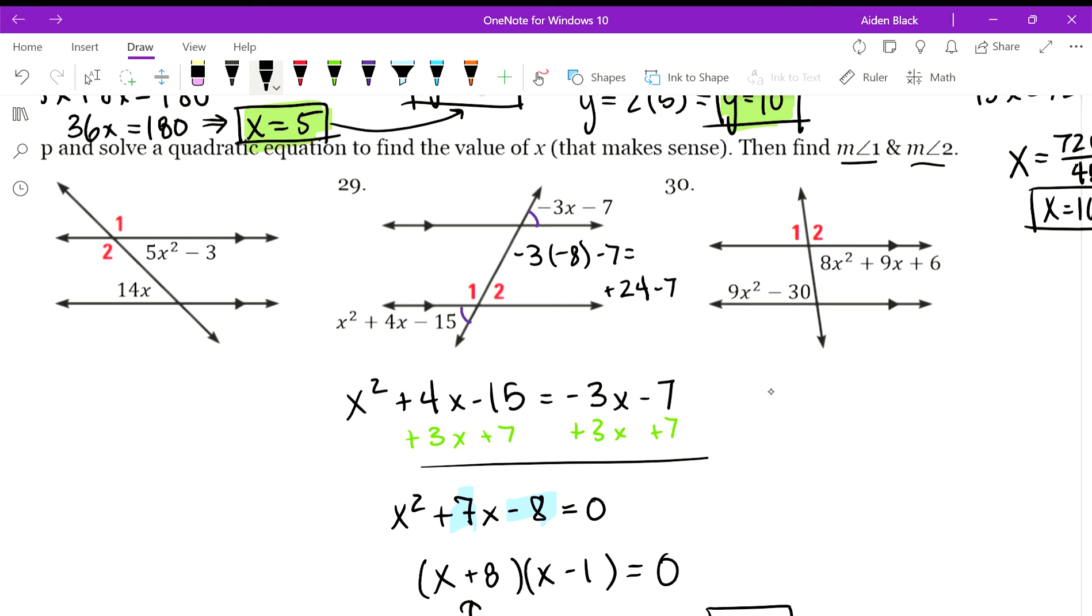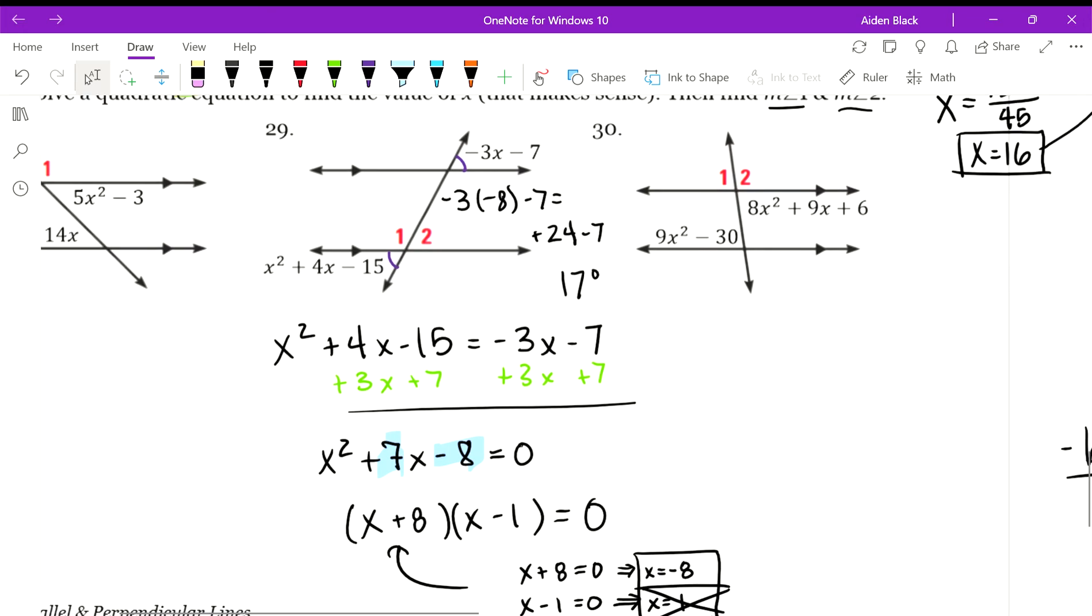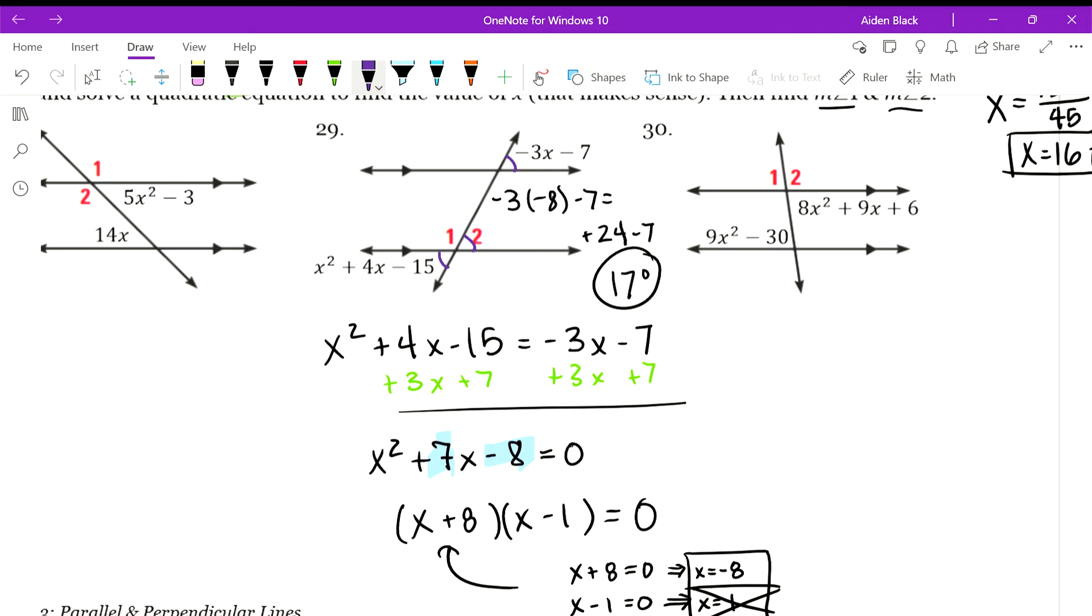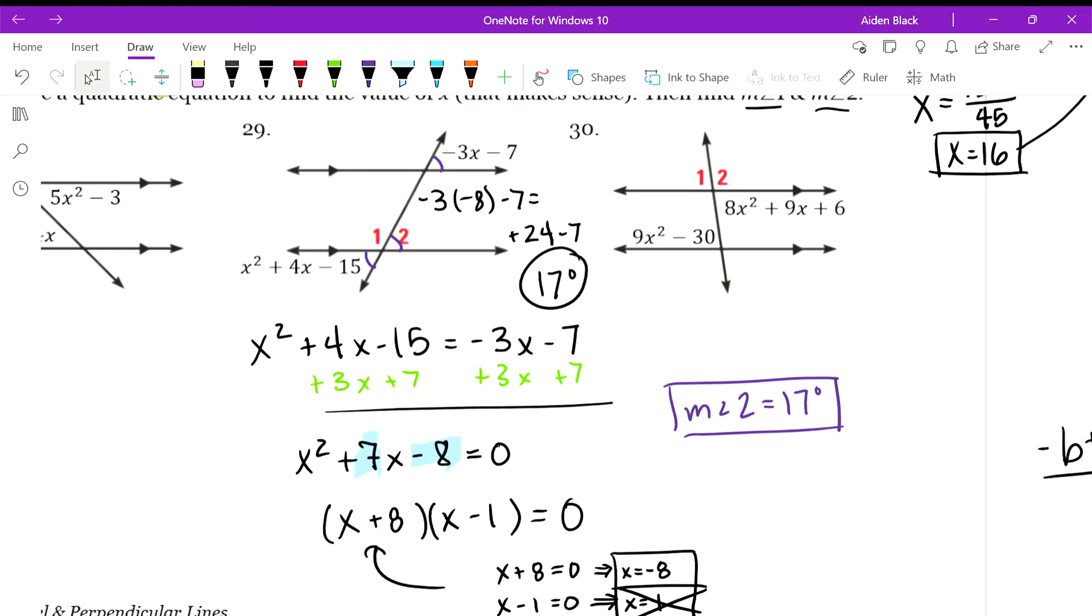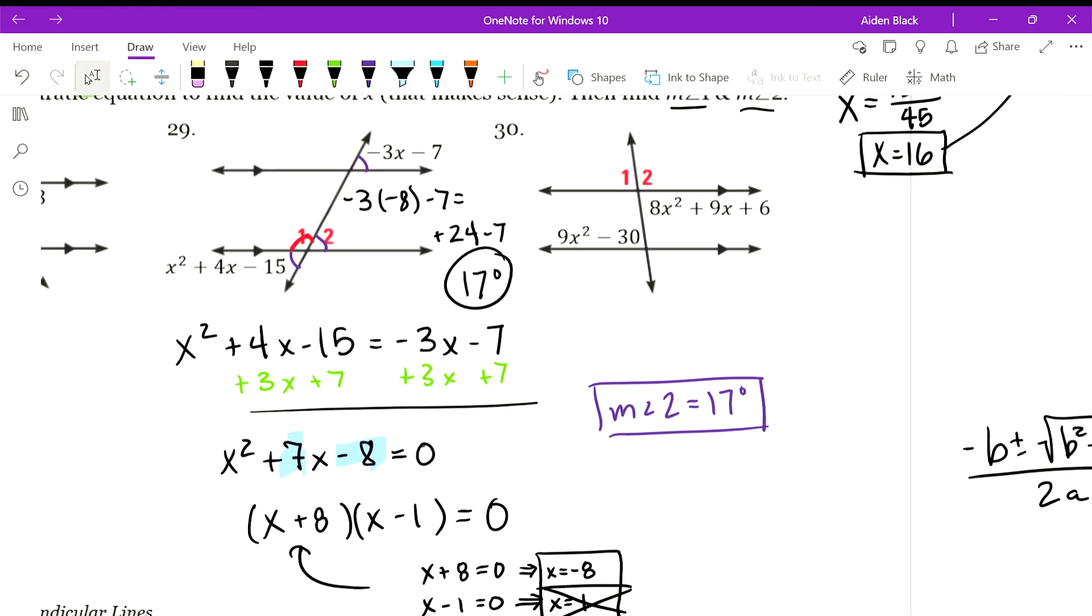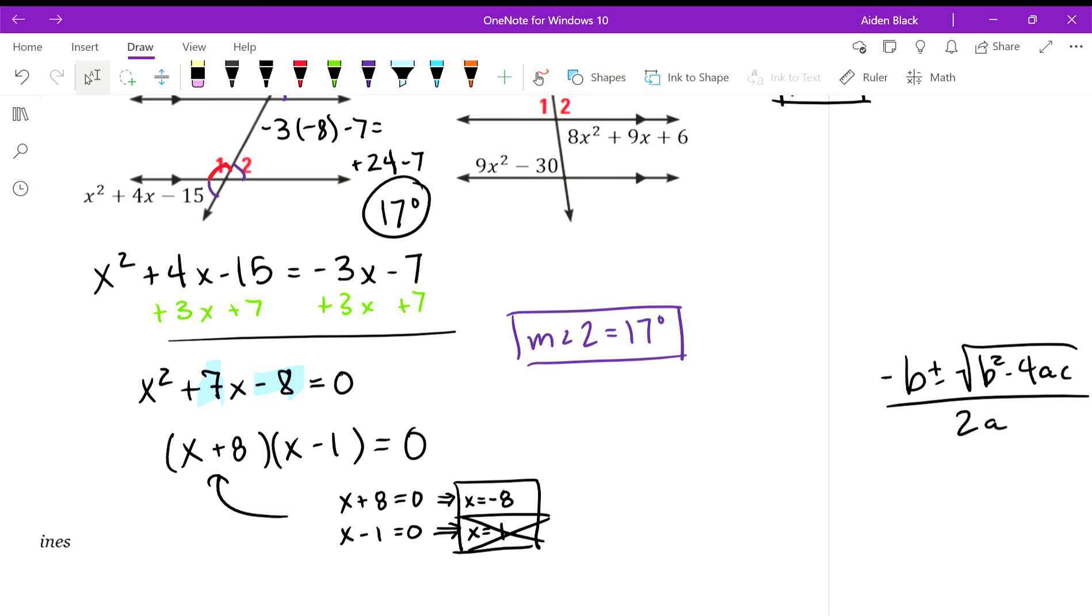So we know that this angle here is 17 degrees, which means this one is also 17 degrees since they're alternate exterior angles. And so we know that angle 2, which is vertical to that angle, is 17 degrees. And then we know that angle 1 is supplementary to angle 2. So 17 plus the measure of angle 1 equals 180, so you can just take 180 and subtract out that 17, which gives us 163.